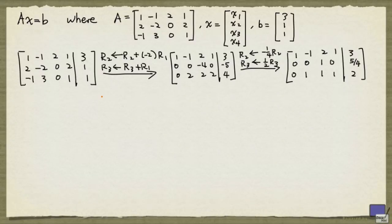The leading one in the third row is to the left of that in row 2, so we will swap rows 2 and 3.